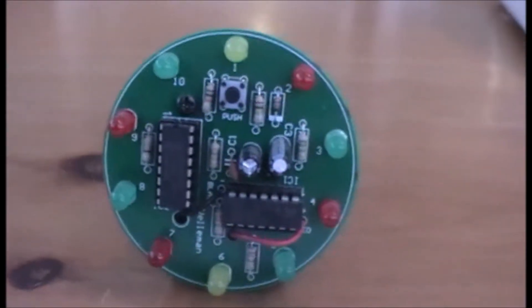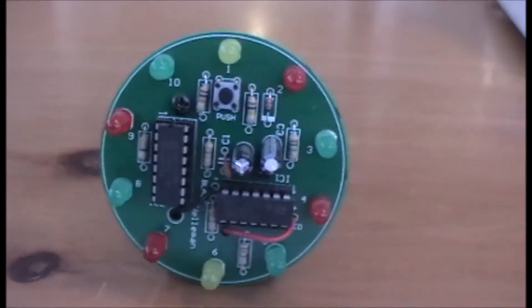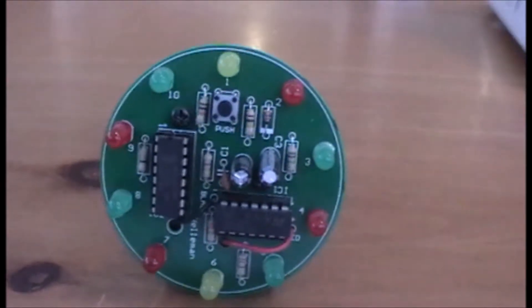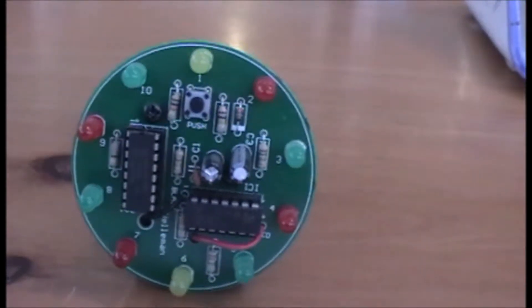This kit consists of 10 LEDs: two yellow ones, four green ones, and four red ones that spin around in a circle and stop on a certain one while flashing.